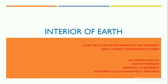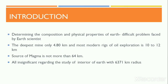Determining the composition and physical properties of Earth is one of the most difficult problems faced by our Earth scientists. The deepest mine in the world, located at Johannesburg in South Africa, is only 4.8 km deep. Even the most modern rigs of oil exploration are only 10 to 12 km deep. Some information about the Earth comes from the examination of rocks at a depth of 8 to 16 km through volcanoes and lava flows. However, the source of this magma is also not more than 64 km — all extremely insignificant compared to the 6,371 km radius of the Earth.